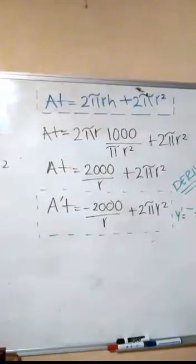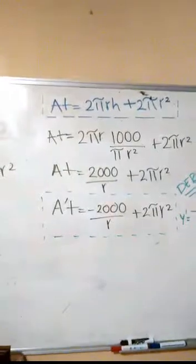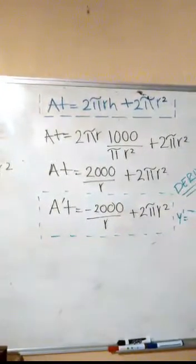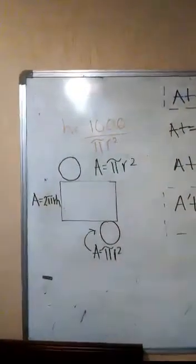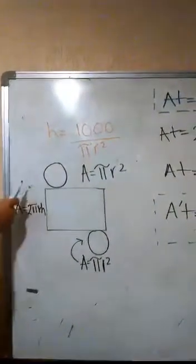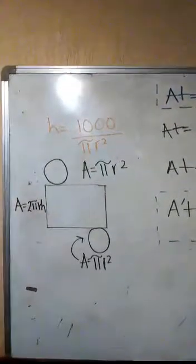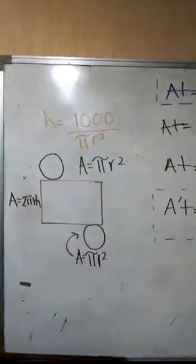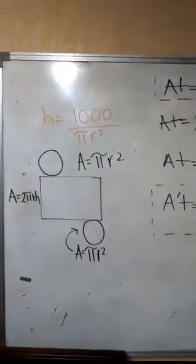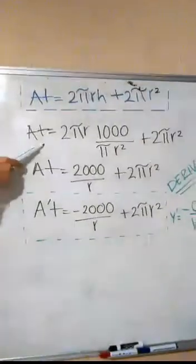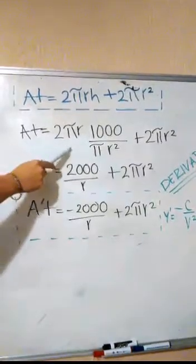Ahora procederemos a sacar el área total. Sabemos que el área total es la suma de las áreas de las figuras indicadas. La base del rectángulo es equivalente al perímetro del círculo, como aquí se indica. Entonces sustituyendo en la fórmula tenemos que el área total es igual a 2πr por 1000 entre π por radio al cuadrado, más 2πr cuadrado.